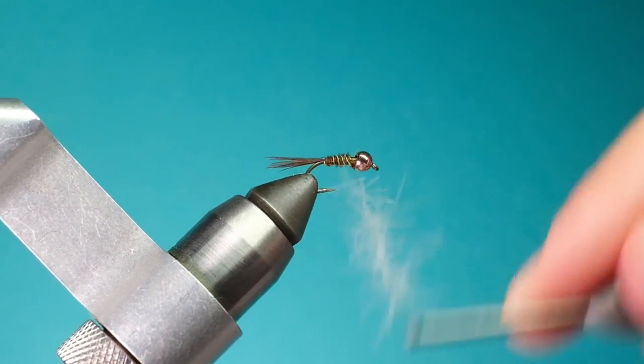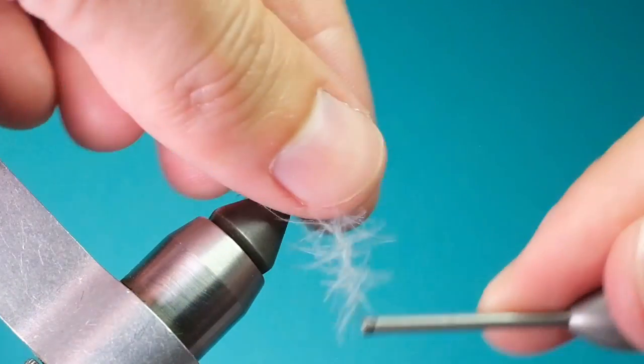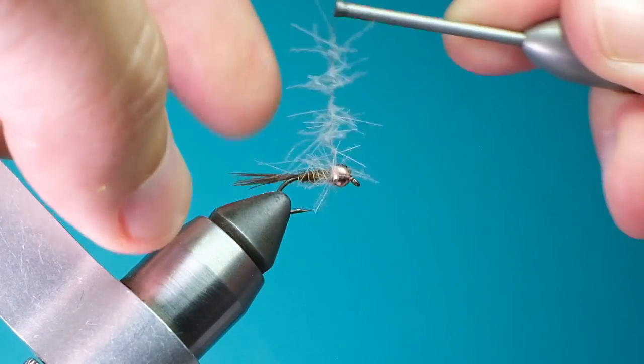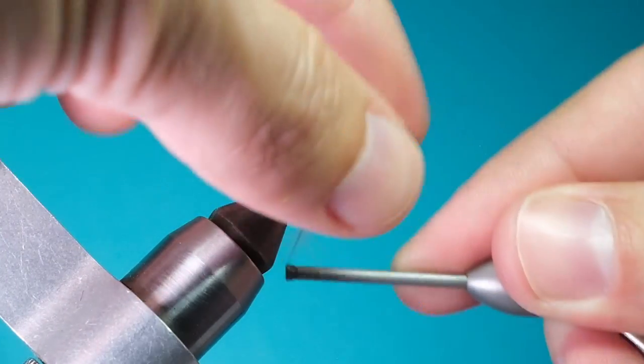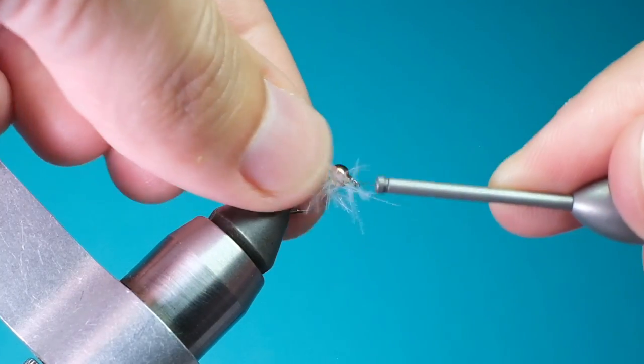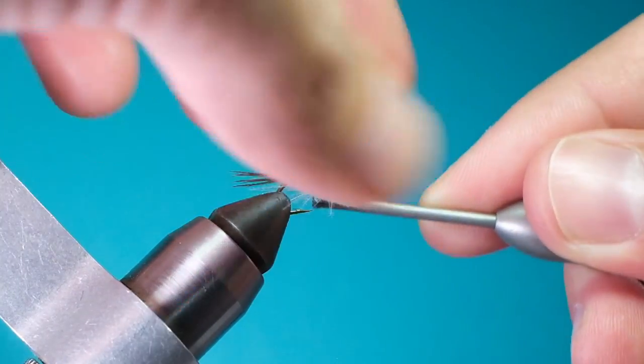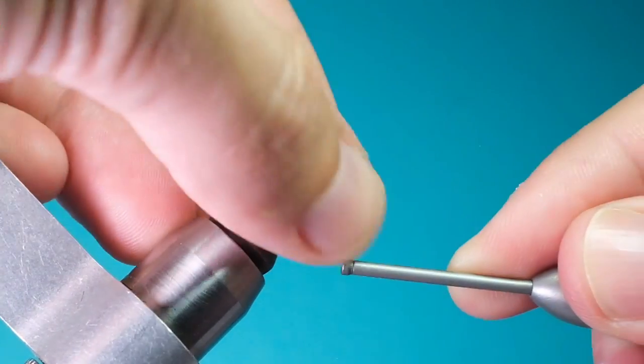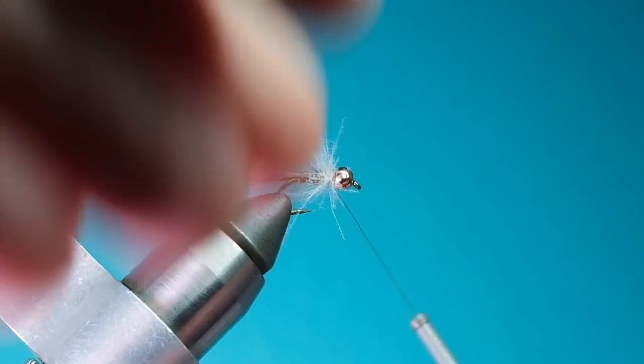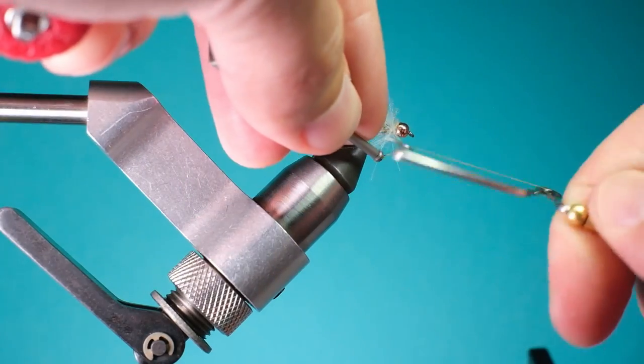Then wrap the feathers behind the bead, pulling the fibers back as you wrap. Once you get all of the feather under the hook, it's time to do a whip finish and then cut off your thread.